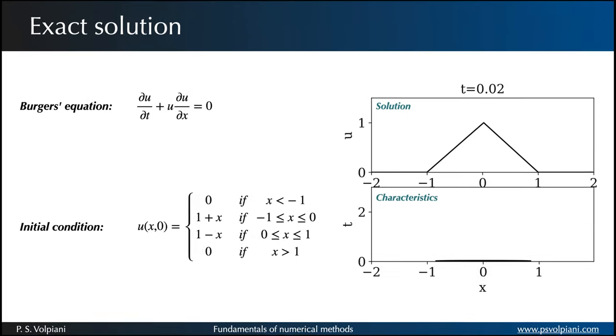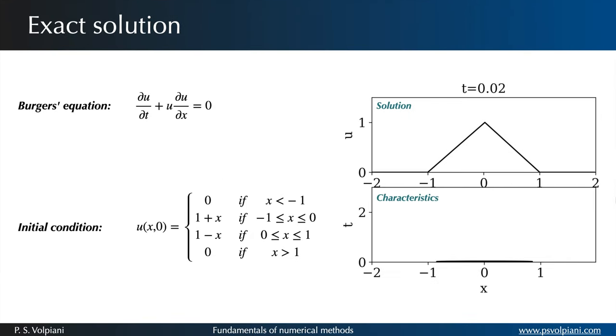We are interested in solving the Burgers equation with the following initial conditions. As we saw in the last video, this problem can be solved analytically using the method of characteristics. This method consists of reducing a hyperbolic partial differential equation to a family of ordinary differential equations along which the solution can be integrated from some initial data on a suitable hypersurface.